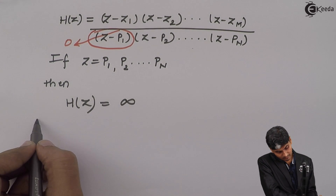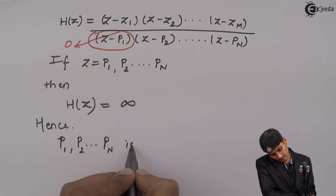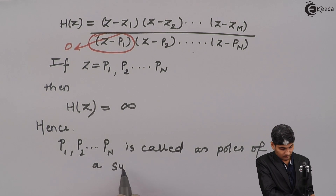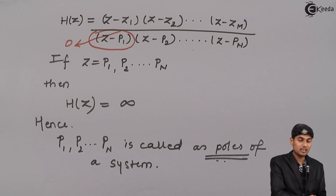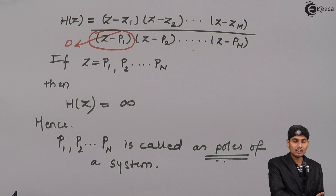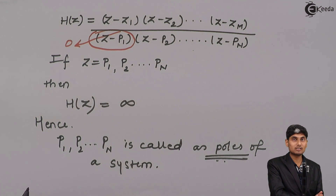Hence, p1, p2, and so on till pn are called the poles of a system. So we have seen two entities of a system: the numerator entities, which we call the zeros of a system, and the denominator entities, which we call the poles of a system. Zeros take H(z) to 0, whereas poles take it to infinity.